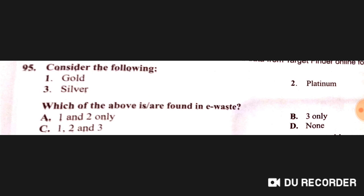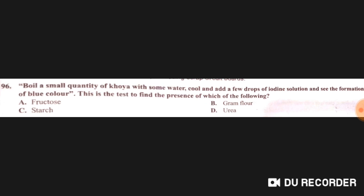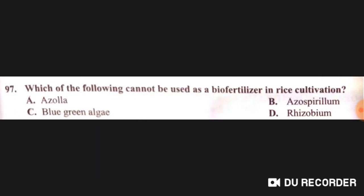E-waste contains gold, platinum, and silver — all three, option C is correct. Boiling a small quantity of khoya with water, cooling it, and adding a few drops of iodine solution to detect blue color is the test for the presence of starch — option C is correct. Rhizobium cannot be used as a bio-fertilizer in rice cultivation. Groundwater in many areas of West Bengal has been contaminated with arsenic, leading to large numbers of poisoning cases.